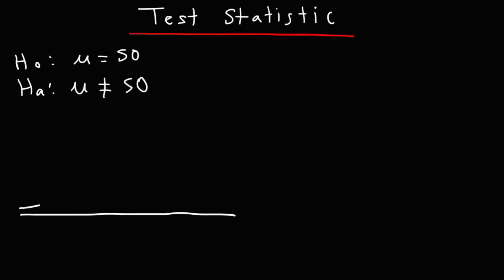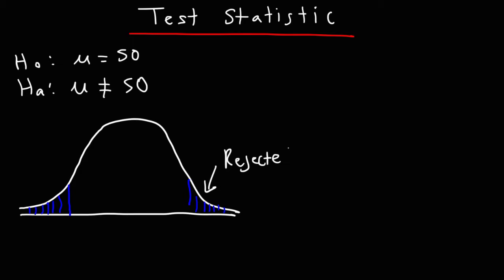For this example, we need a two-tailed test. The area shaded in blue is known as the rejection region. The area that is not shaded is the fail-to-reject region. The Z values that separate these two regions are the critical values.